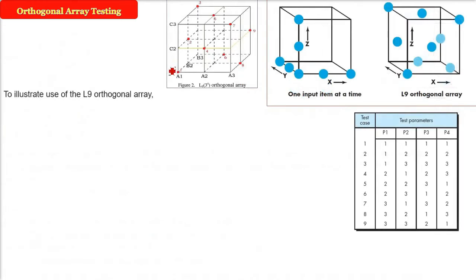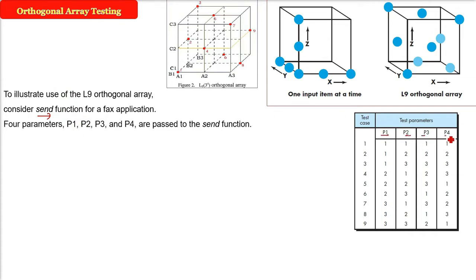In order to understand this—because this was just the theory—let us say we have a send function for some faxing application. Four parameters are there: p1, p2, p3, p4, or you can say four variables, and the function is send. So this is a function send. We have four variables p1, p2, p3, p4.